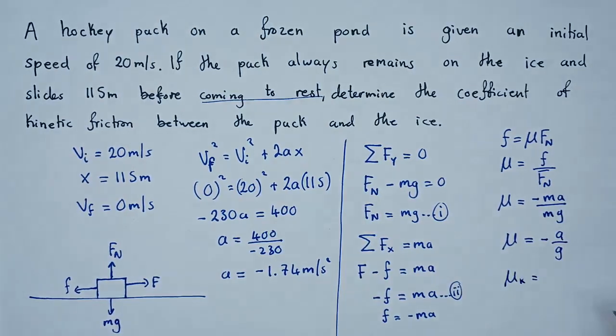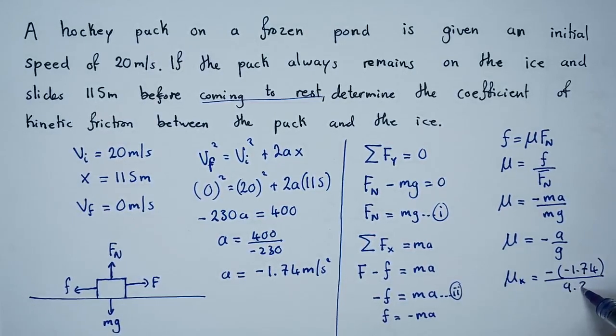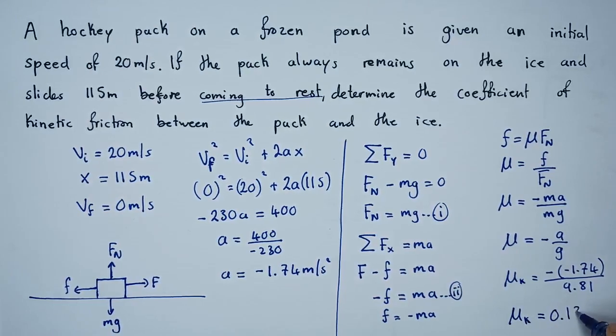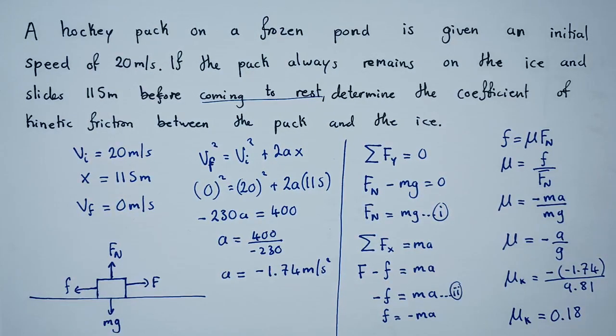So mu, we can say mu k kinetic friction, is negative acceleration. Remember we found negative 1.74 divided by g which is 9.81. So if we divide these two values, we'll see that the coefficient of kinetic friction will give us the value 0.18.